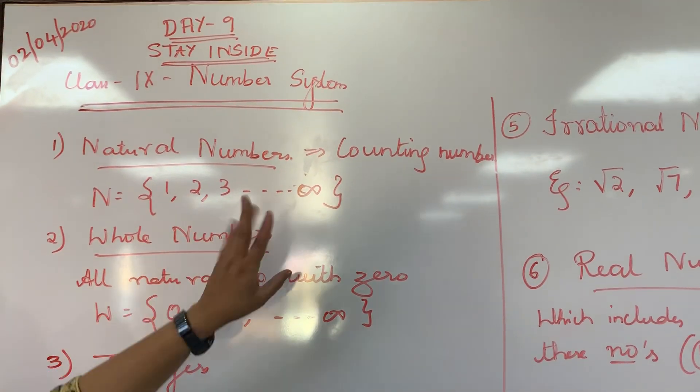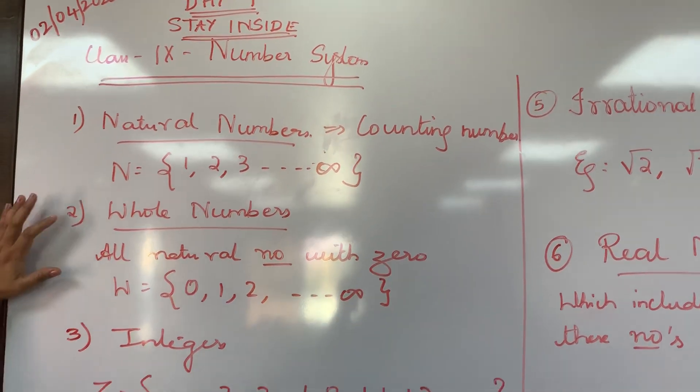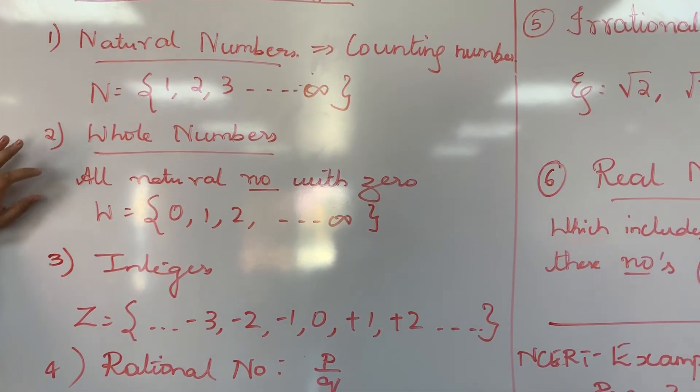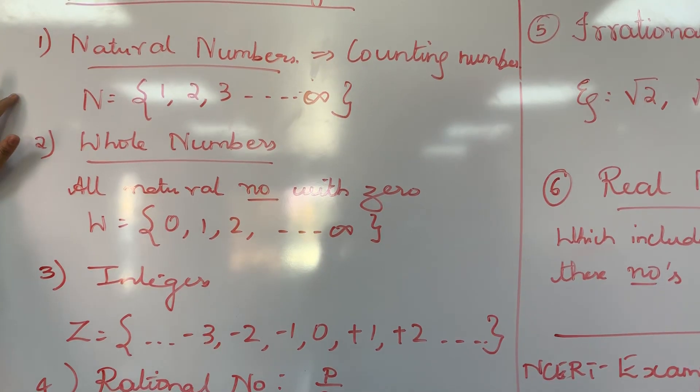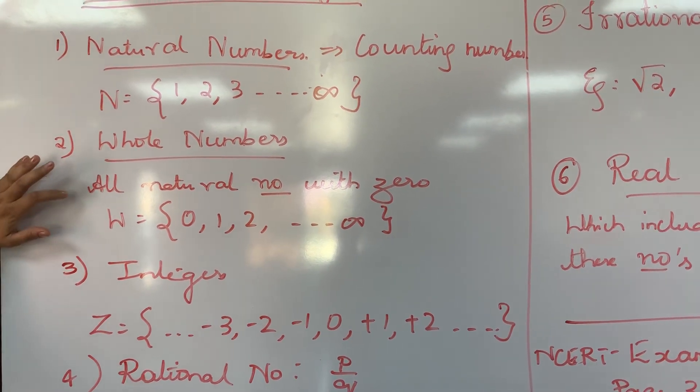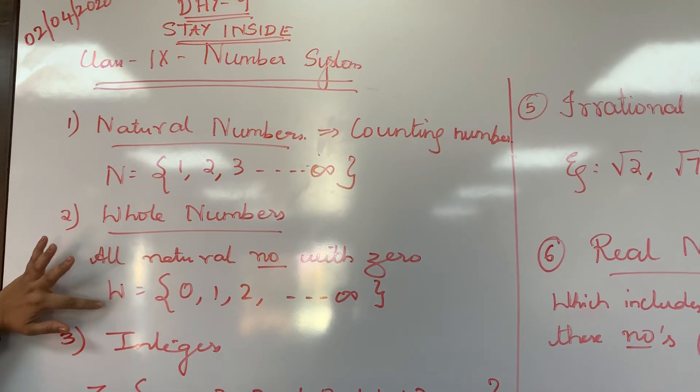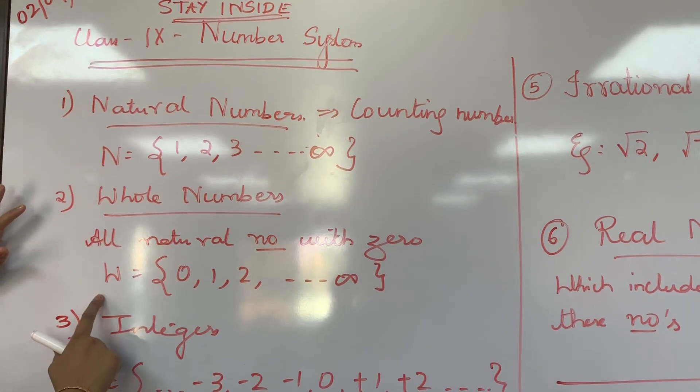...it's 1, 2, 3 up to infinity. Comes under natural number. Next is whole number. Whole number is also a natural number but 0 is included in this. I repeat, even whole number is a natural number but includes even 0. We represent by W.